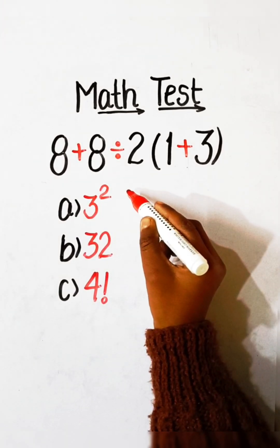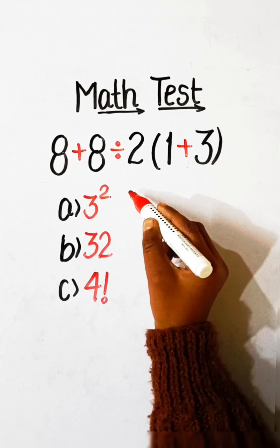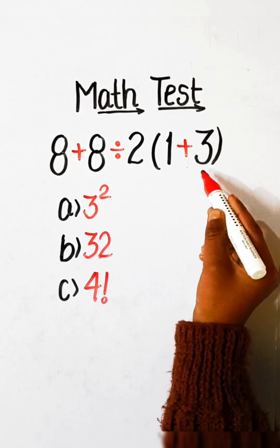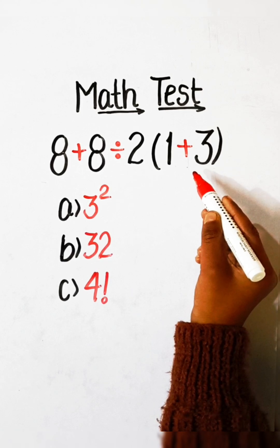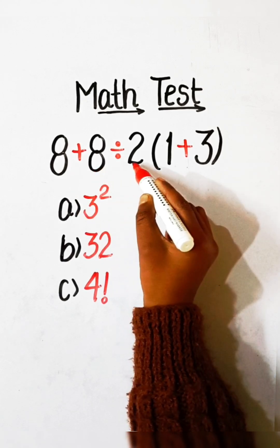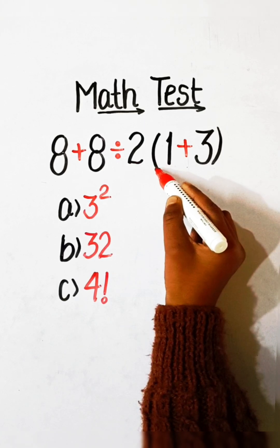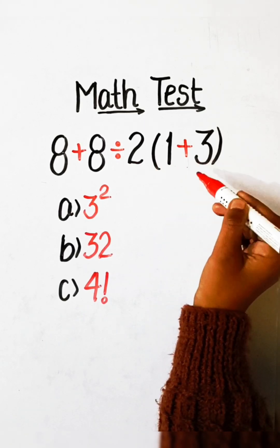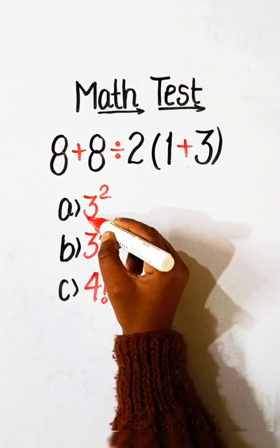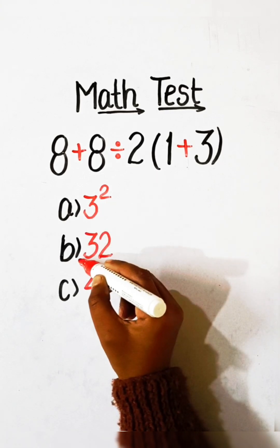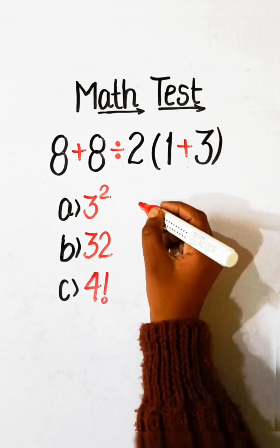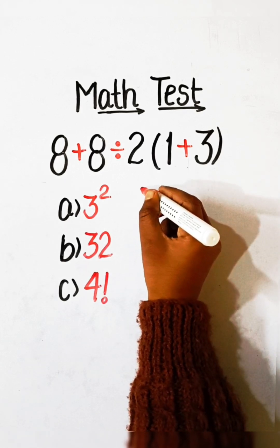Hello everyone, welcome back to my YouTube channel. In this video we will solve this simplification question: 8 plus 8 divided by 2 under bracket 1 plus 3, equals what? Option A: 3 squared, Option B: 32, Option C: 4 factorial. Let's solve this.